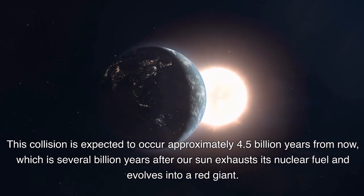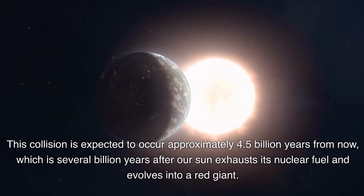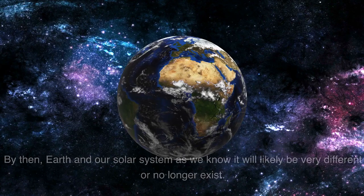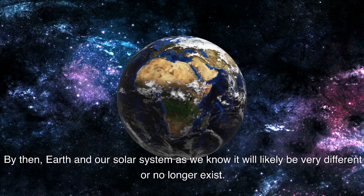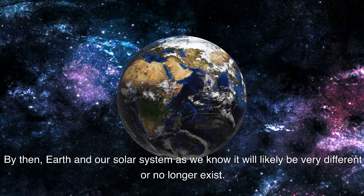This is several billion years after our sun exhausts its nuclear fuel and evolves into a red giant. By then, Earth and our solar system as we know it will likely be very different or no longer exist.